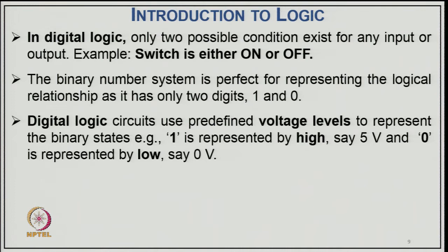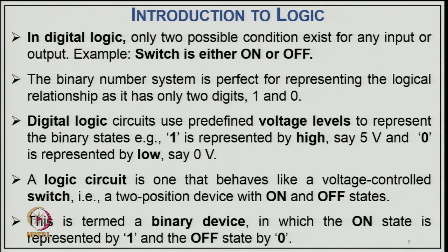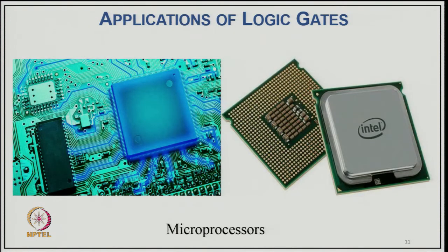In digital logic, only two possible conditions exist for any input or output — on or off — and the binary number system is perfect for representing this. Digital logic circuits use predefined voltage levels to represent binary states: logic 1 is represented by high, say 5 volts, and logic 0 by low, say 0 volts. A logic circuit behaves like a voltage-controlled switch — a two-position device with on and off states. Typical applications include microprocessors.